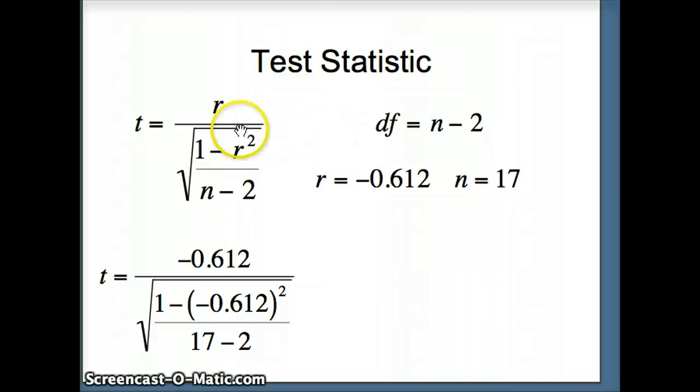So we're going to construct our test statistic. R over root 1 minus R squared over N minus 2. R, negative 0.612 over the square root of 1 minus negative 0.612 squared over 17 minus 2. And I will go ahead and solve this using Excel.